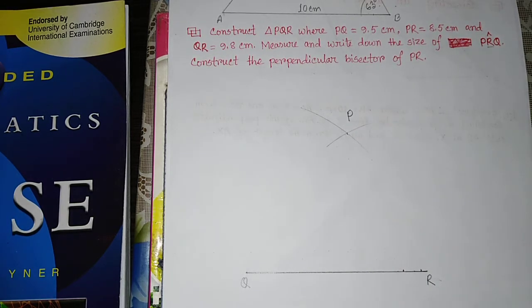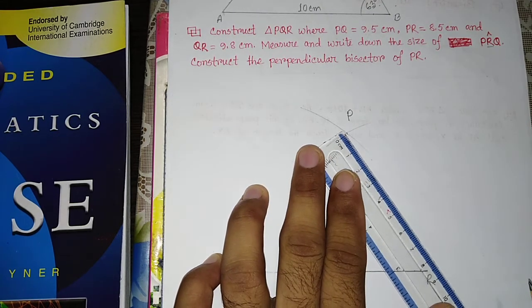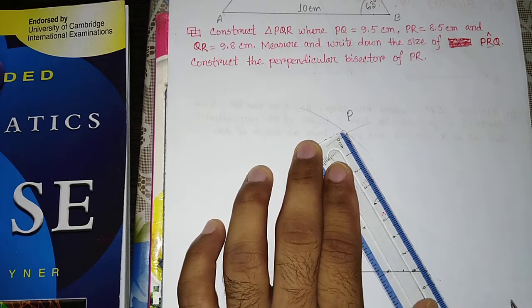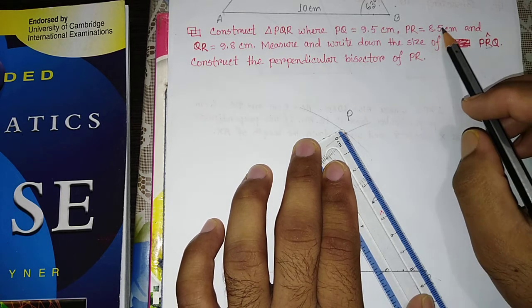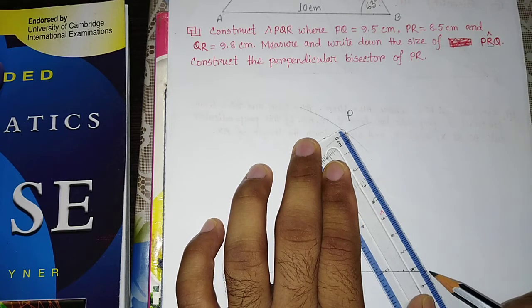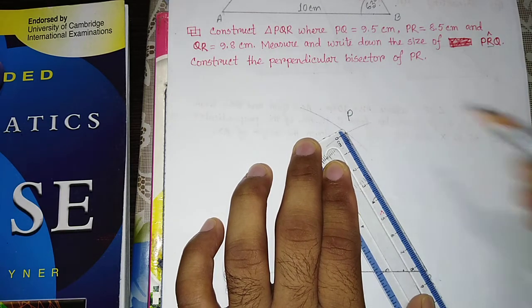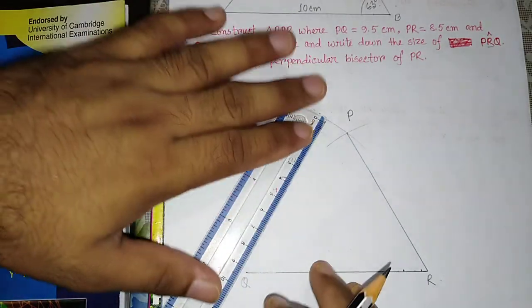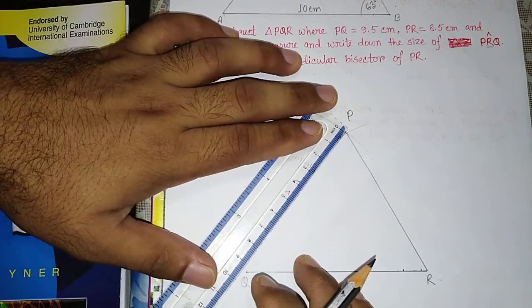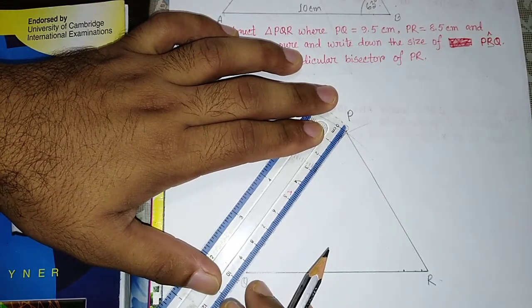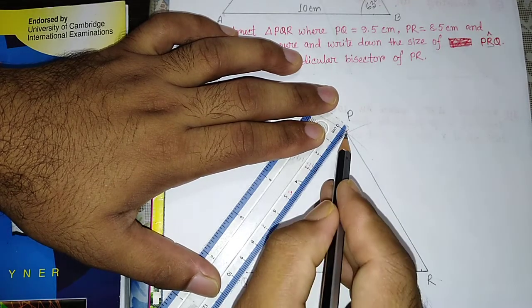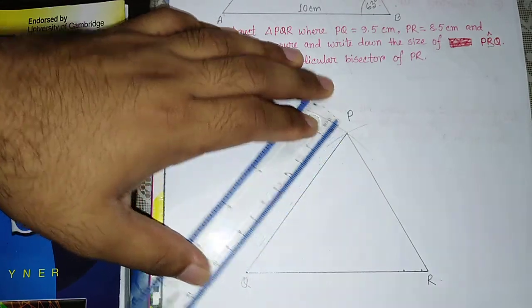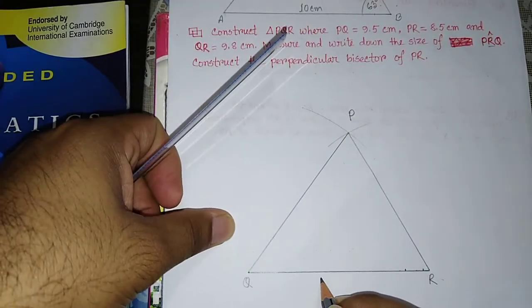So now I have to join PQ and PR. PR is 8.5 cm, and PQ is 9.5 cm. We have to join the points to complete the triangle. That means I have to join all sides — QR is 9.8 cm, PQ is 9.5 cm, and PR is 8.5 cm.